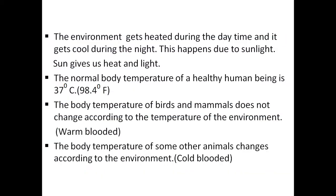The environment gets heated during the daytime and gets cool during the night. This happens due to sunlight. The Sun gives us two types of energy: heat and light. What is the normal body temperature of a healthy human being? It's 37 degrees Celsius, or 98.4 degrees Fahrenheit.